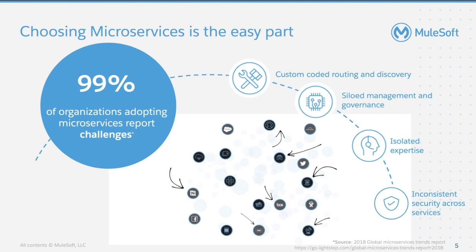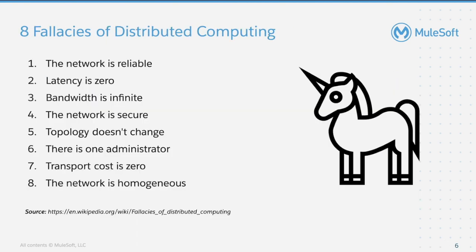These are some of the challenges our customers have experienced. When implementing microservices, developers fall into the eight fallacies of distributed computing. As a developer, you always think that the network is reliable, latency is zero, bandwidth is infinite, the network is secure, topology doesn't change, there is one administrator, transport cost is zero, and the network is homogeneous. This happens because developers are often shielded from the underlying infrastructure and operational aspects of the system, which they assume to be in place all the time.